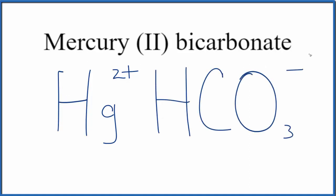So mercury (II) bicarbonate is a neutral compound. We don't have ion written after the name. Because it's neutral, the charges need to add up to zero, have a net charge of zero.